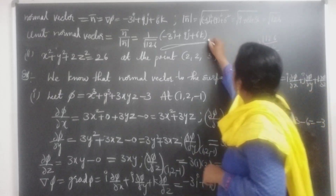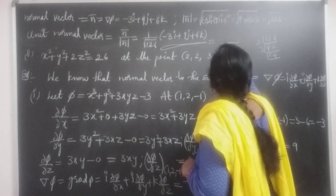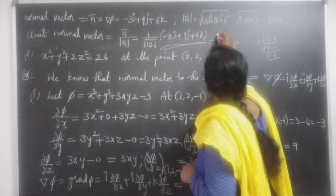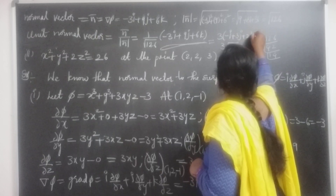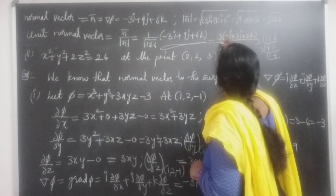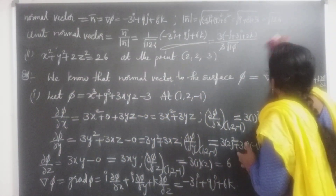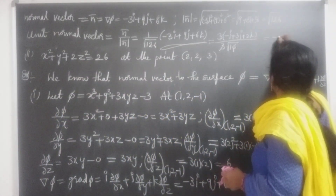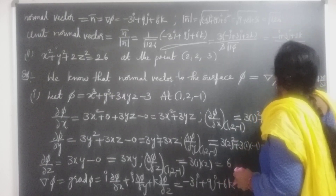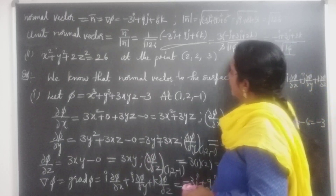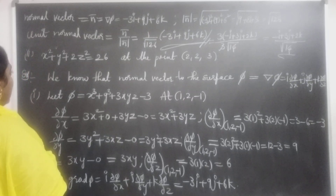Taking 3 common: √126 = 3√14. So 3 cancels, giving the simplified unit normal vector = (−i + 3j + 2k) / √14. This is the first answer.